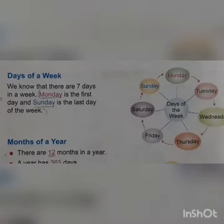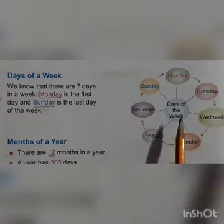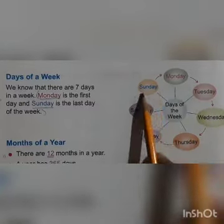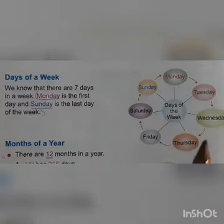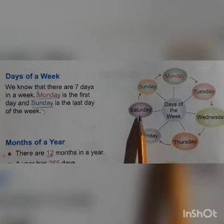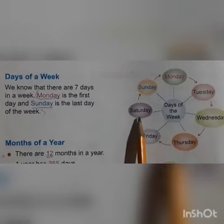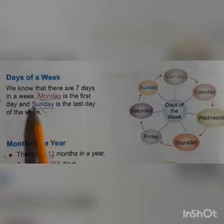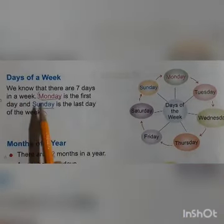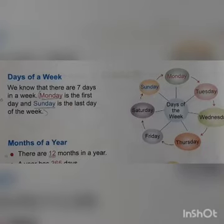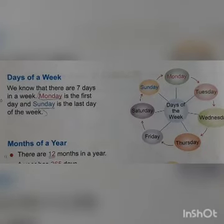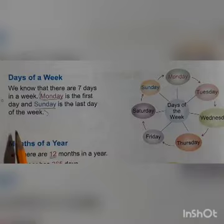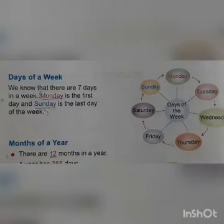There are 7 days in a week: Sunday, Monday, Tuesday, Wednesday, Thursday, Friday, and Saturday. Monday is the first day and Sunday is the last day of the week.